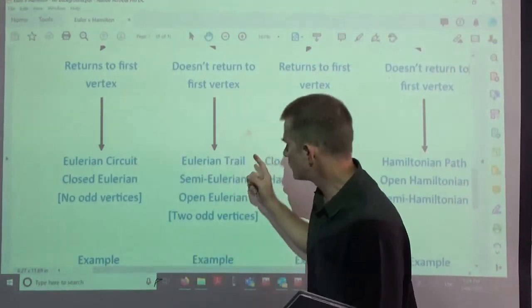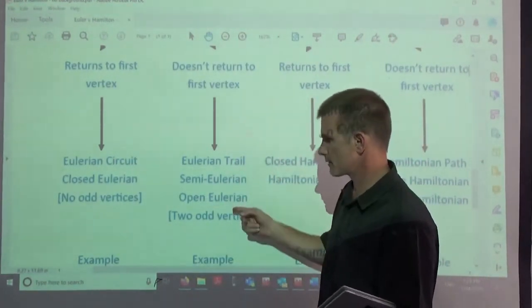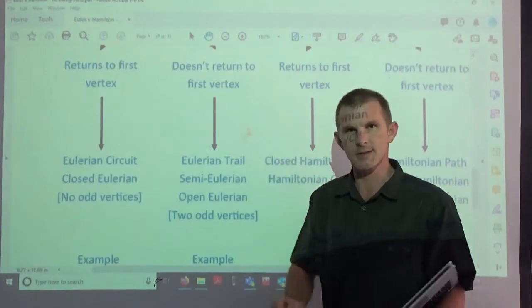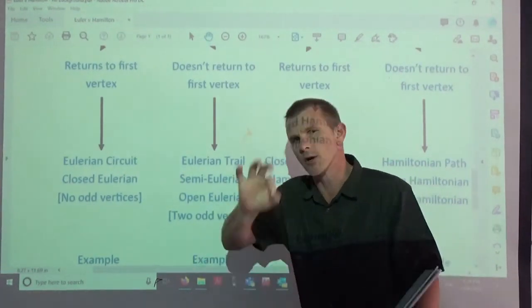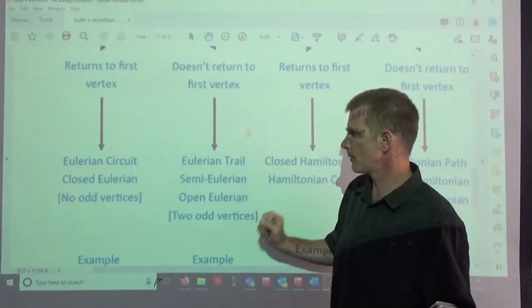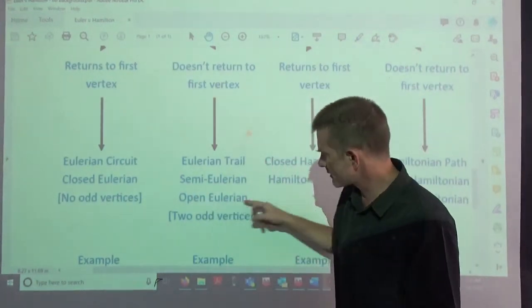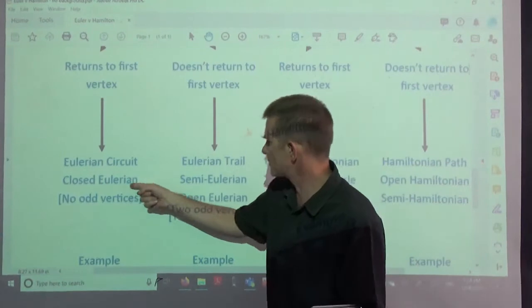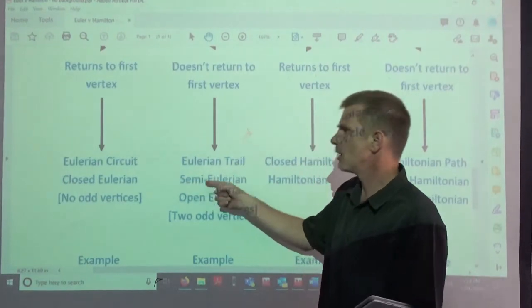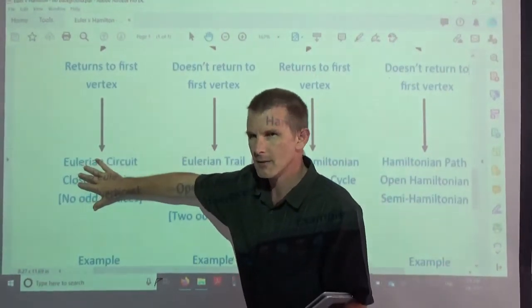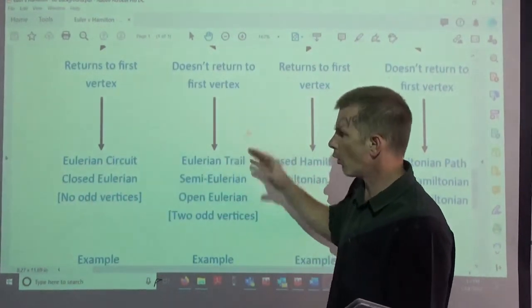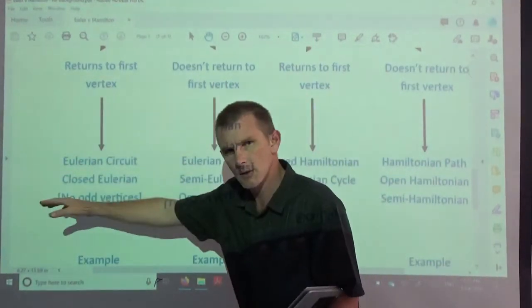If you don't return to your first vertex, then you must have two and only two odd vertices. Otherwise it's not going to work. Trust me, it won't work. Try with one. Then you would call it an Euler trail or a semi-Euler or an open Euler. So you can see how this naming matches.